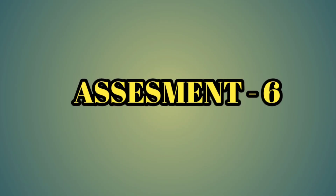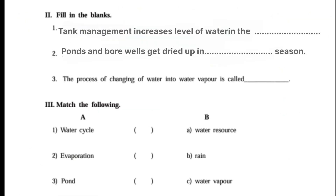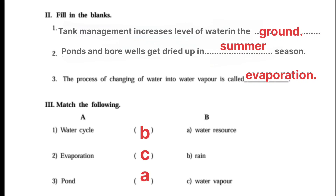Next Assessment Six. Choose the correct answer. First one: Which of the following is a water resource? Answer: A — Pond. Second one: Ponds and bore wells get dried out in dash season. Answer: B — Summer. Third one: Dash helps to kill the germs in the water. Answer: A — Chlorination. Next, fill in the blanks: Tank management increases level of water in the Ground. Ponds and bore wells get dried up in Summer season. The process of changing water into water vapor is called Evaporation.